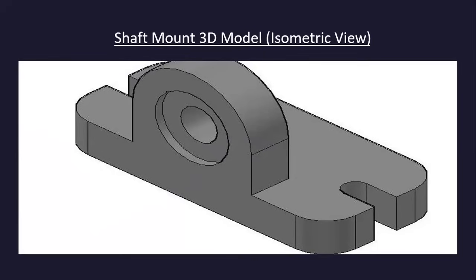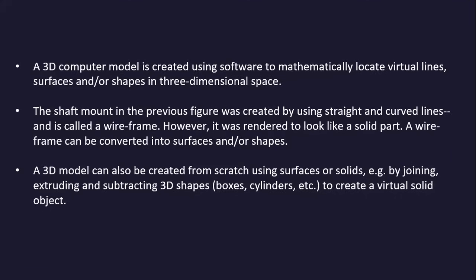An isometric view of a shaft mount 3D model is shown. A 3D computer model is created using software to mathematically locate virtual lines, surfaces, and shapes in three-dimensional space. The shaft mount was created using straight and curved lines and is called a wireframe, but was rendered to look like a solid part. A wireframe can be converted into surfaces and/or shapes, or a 3D model can be created from scratch by joining, extruding, and subtracting 3D shapes such as boxes and cylinders to create a virtual solid object.